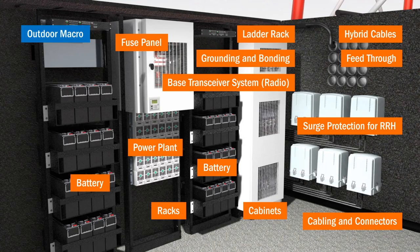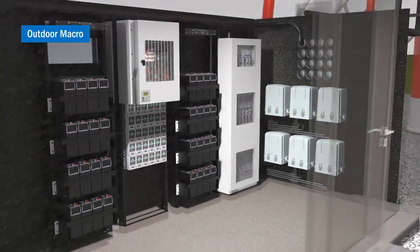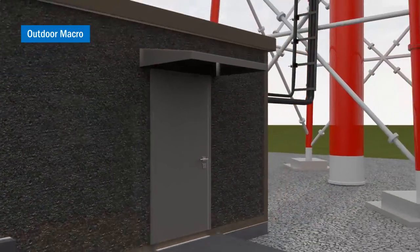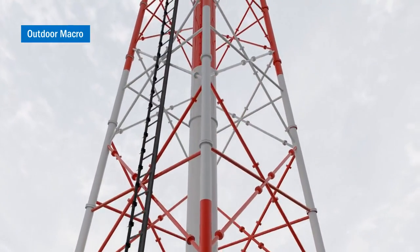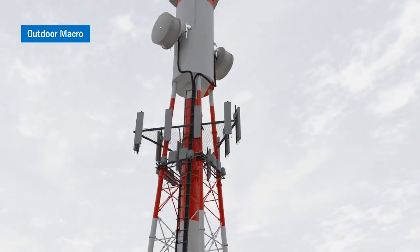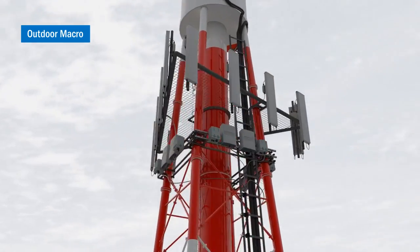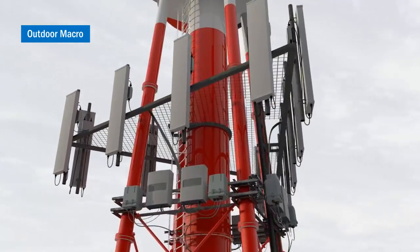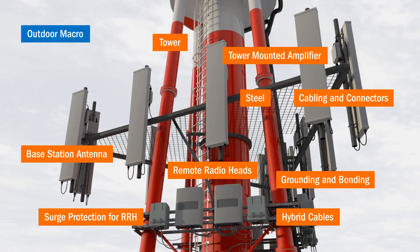What is Outdoor Macro? Outdoor Macro is what has been traditionally thought of as cellular coverage — the large towers or rooftop installations with large antennas. Outdoor Macro solutions help to meet the increased capacity demand for data connectivity by increasing the number of bands available whilst using the same footprint. Previously, one cell site would cover a single band per carrier; now, these cell sites can cover up to four bands per carrier.